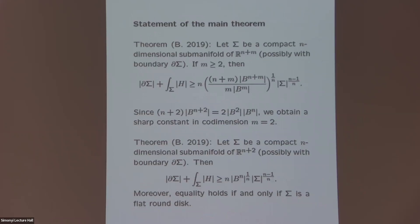So after this background, let me talk about the result I want to show you today. Suppose that sigma is a compact n-dimensional manifold embedded in R^{n+m}, and it may have boundary or it could also be closed. Then I can prove this lower bound for the combination of the boundary measure of sigma and the L^1 norm of the mean curvature. This combination can be bounded from below by the scaling invariant power of the volume, with a particular constant depending on the dimension and codimension. This requires the codimension to be at least two, but in codimension one, the result applies as well because you can simply add an extra dimension to the ambient space.